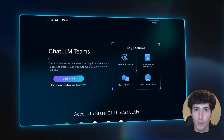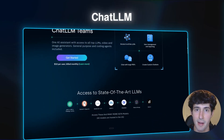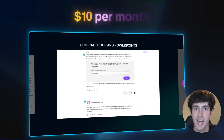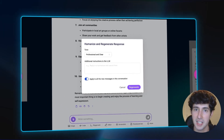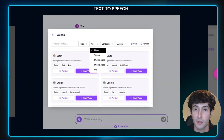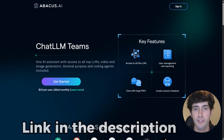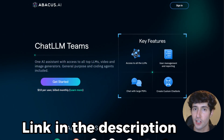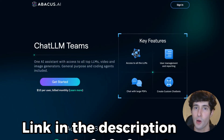We're going to do that by using a tool called ChatLM, which gives you access to all of these premium models for just $10 per month. To access this tool, you have to go over to chatllm.abacus.ai — I will leave a link for it in the description below, so make sure you go and sign up and follow along with the video.